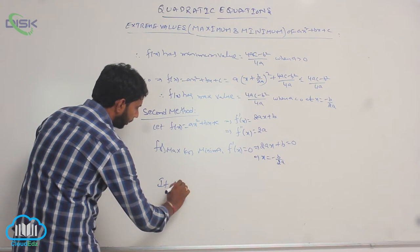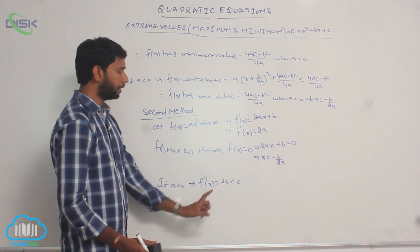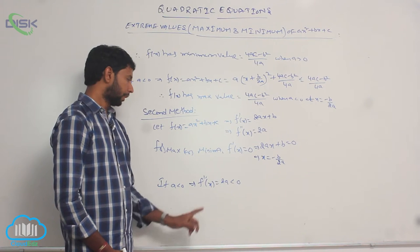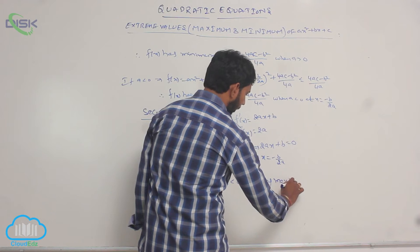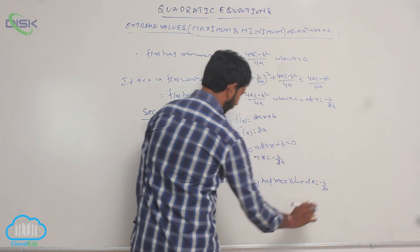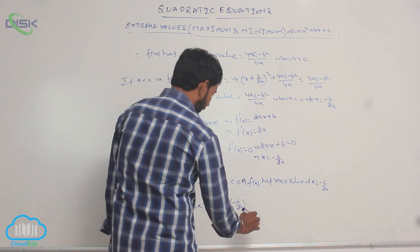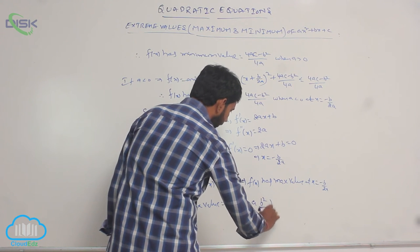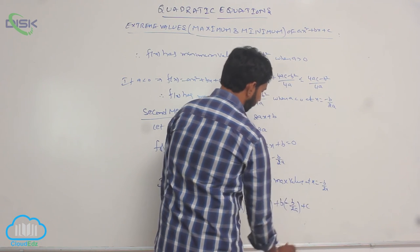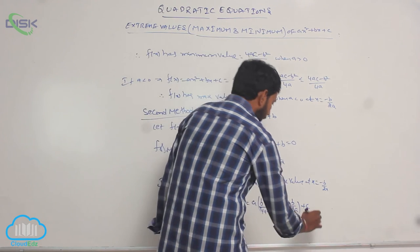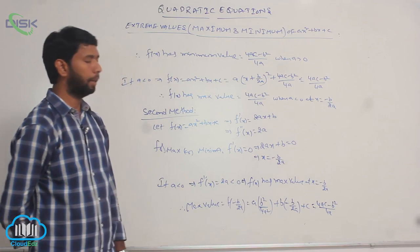If a is less than 0, then f double dash x equals 2a, which is less than 0, since a is negative, making the product negative. So f double dash x less than 0 implies f of x has a maximum value at x equal to minus b by 2a. Therefore, maximum value f of (minus b by 2a) equals a times (b squared by 4a squared) plus b times (minus b by 2a) plus c, which after simplification equals (4ac minus b squared) by 4a.